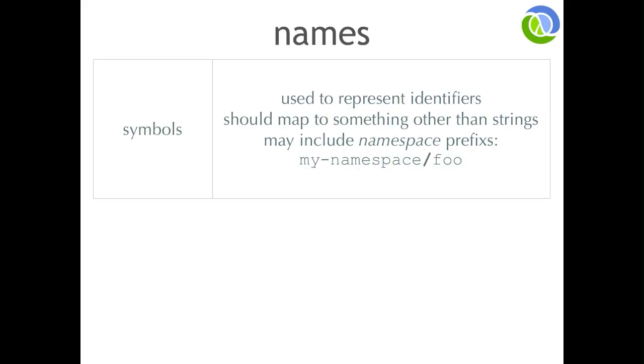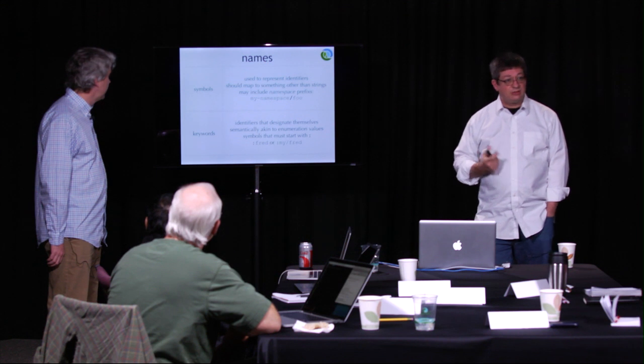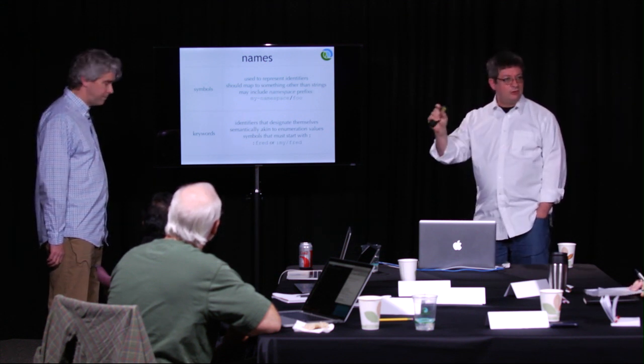There are a couple of different ways to name things. One of them is a symbol, and if you're from a language like Ruby you're probably familiar with the concept of a symbol. It's a string that's used to represent something, typically an identifier, and it should map to something other than just strings. It is a symbolic name for something and it can include namespace prefixes. That's one of the features of the Clojure language itself uses namespaces pretty heavily to partition functionality into separate logical units of work. You can think of namespaces sort of like package names in Java as providing a consistent namespace for a grouping of like things.